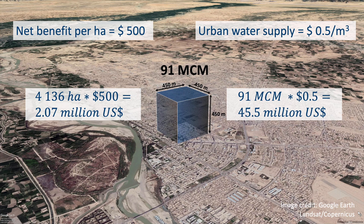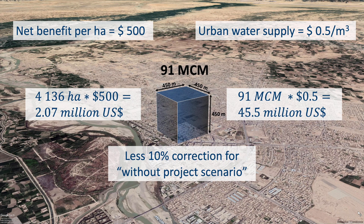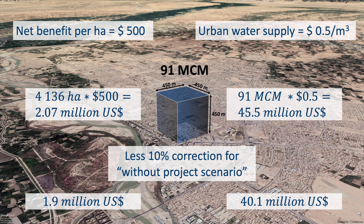Of course, some of this water would have evaporated anyway if the dam did not exist, from the river and its floodplain inside the current reservoir area. Let's assume that this would have been 10% of current evaporation losses. So we can reduce the estimated economic losses to $2 million US dollars if all the water was used for agriculture, or $40 million dollars if all the water was used for urban water supply. Obviously, the real number must be somewhere in between, depending on how the water is divided between drinking water and irrigation needs in the Helmand Basin downstream of the Kajaki Dam.